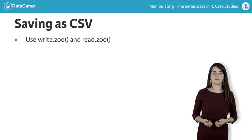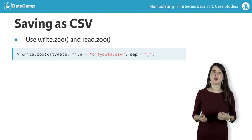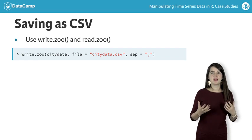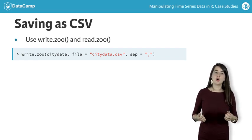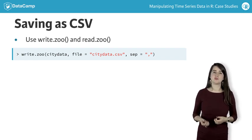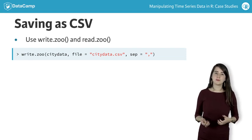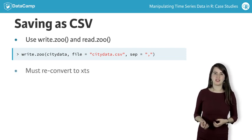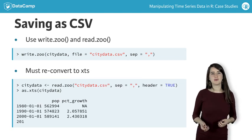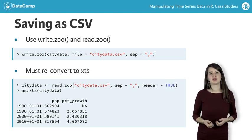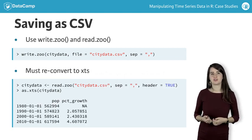To do this, you should use the write.zoo command, which allows you to specify the format of your export file. However, with compatibility comes a loss of information. When you reopen the CSV file using read.zoo, you'll find that your data is encoded as a zoo object rather than an XTS object. Before proceeding with your analysis, you'll need to reconvert the object to XTS.